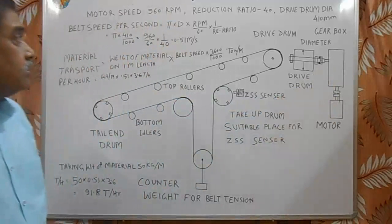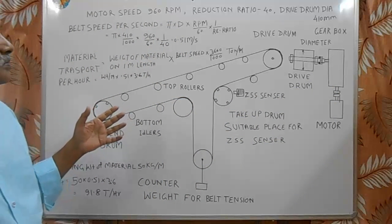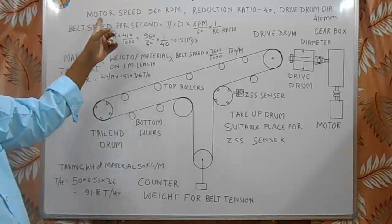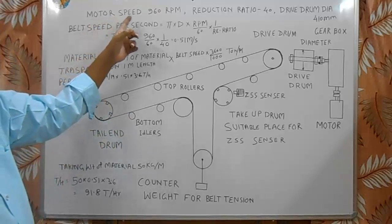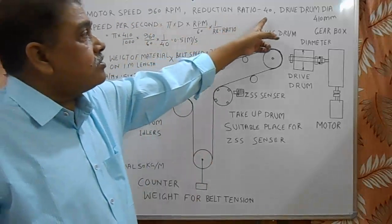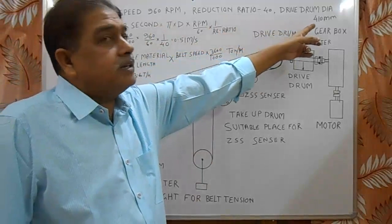For calculation of material handling per ton per hour, we need to have these things. First one motor speed, that is 960 rpm in this case. Reduction ratio of gearbox that is 40, and drive drum diameter here it is 410 millimeters.